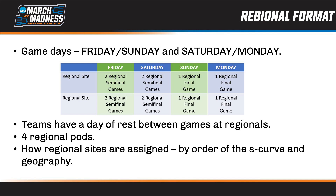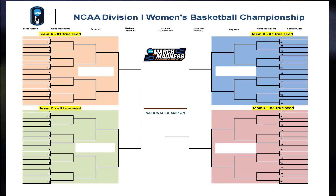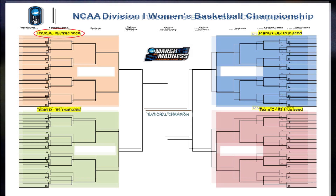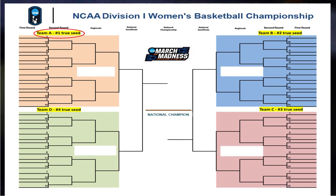The bracketing principles also ensure that the number one overall seeded team will be assigned to a regional pod with game days on Friday and Sunday. As you can see here, each regional pod is identified with a different color of shading. The yellow highlight shows the location on the bracket where seeds one through four are placed, with the number one True Seed always placed in the top left pod.